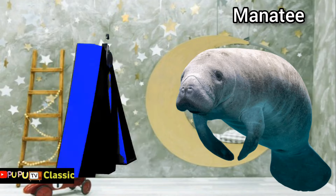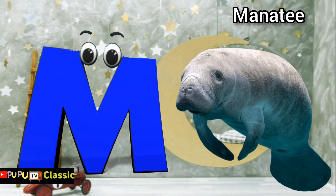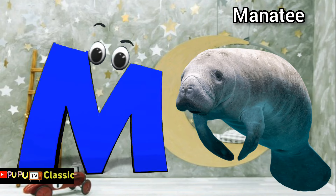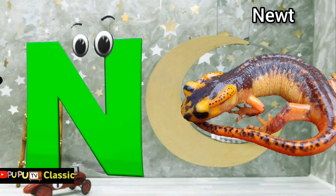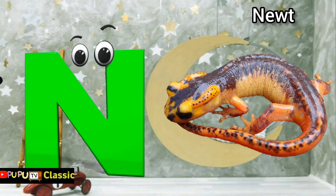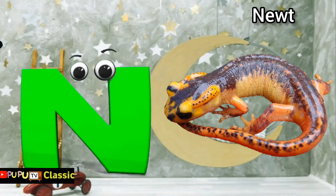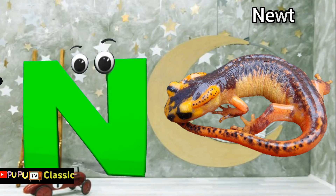M is for manatee, m-m-manatee. N is for newt, n-n-newt.